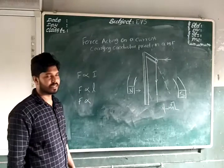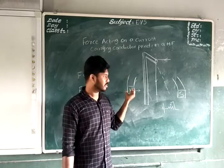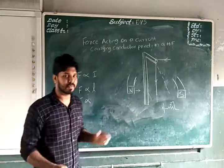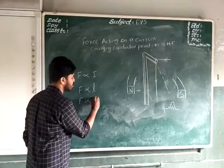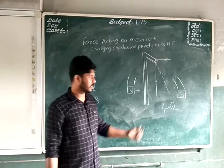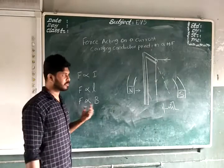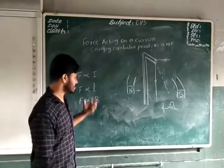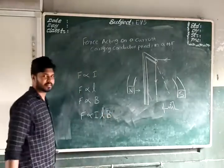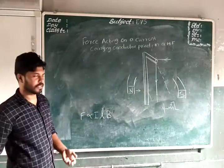The last factor: force is found to increase if we increase the magnitude of the external magnetic field. Here we have an external magnet; if we replace it with a weaker magnet, it experiences less force. So force is directly proportional to the magnitude of the external magnetic field — not the field due to the conductor itself. These three factors combine into one: F is proportional to ILB.